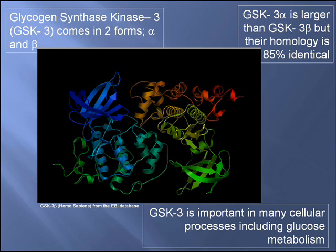The alpha form is larger than the beta form, but 85% of the homology is shared. There's a higher concentration of GSK3 beta found in the cell than GSK3 alpha, because it's not just in the cytosol, but also in the nucleus and the mitochondria.